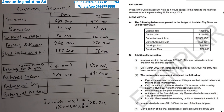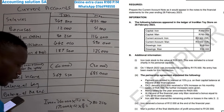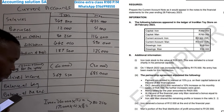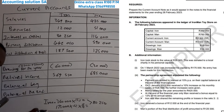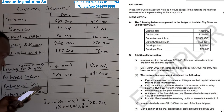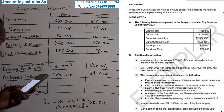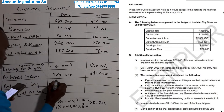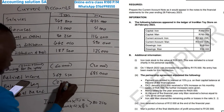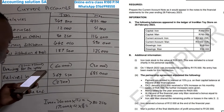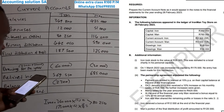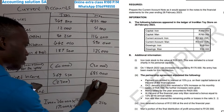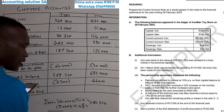Remember: in equity, debit is a minus and credit is a plus. For Iron, the opening balance is on the debit side, so it is minus 2 300. For Men, the opening balance is 4 500 on the credit side, so it is a plus.